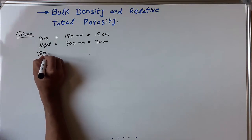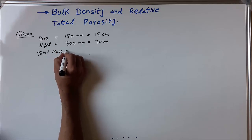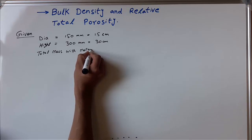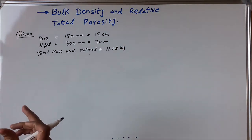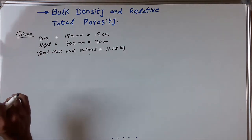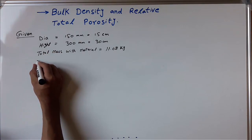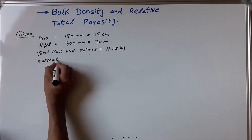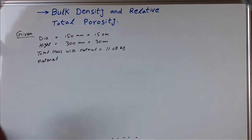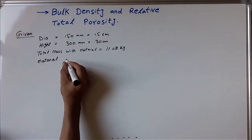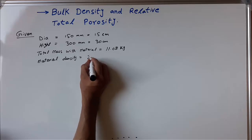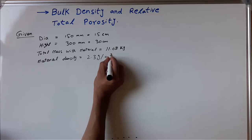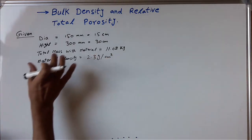The total mass with material is equal to 11.08 kilograms. You can have a different mass if you have different cylinder dimensions. The material we are going to use is concrete. The material density is equal to 2.3 grams per cubic centimeter. This is the given data.